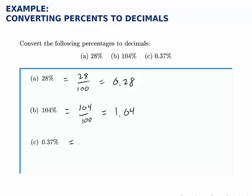For the last one, zero point three seven percent is zero point three seven divided by a hundred, so when we move that decimal point two places to the left as we divide by a hundred, the answer we get is zero point zero zero three seven as the decimal form of that percentage.